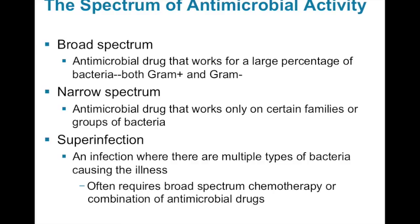One of the problems in treating bacterial infections comes when there's not a single infection but what we call a superinfection, where a person has multiple types of bacteria causing the illness. In this case you're going to require broad-spectrum chemotherapeutics, or maybe even a combination of antimicrobial drugs. Sometimes they'll have to culture the actual specific bacteria, do some testing to figure out what drugs they're susceptible to, and then maybe use a narrow-spectrum drug on them.